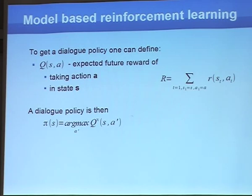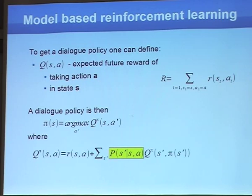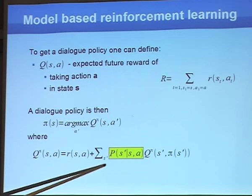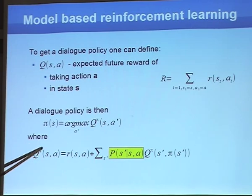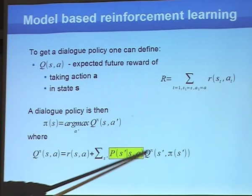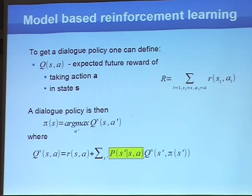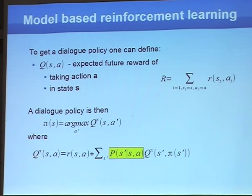If we have the model, computing the Q-function is trivial — we average over all possible continuations weighted by their probability. Given a policy we compute the Q-function, then recompute the policy, and iterate. There are guarantees that this converges to the optimal policy. This is called the policy iteration approach. Without the model, we use observations — sequences of states, actions, and rewards — to estimate the Q-function using least squares on an over-determined system of equations.